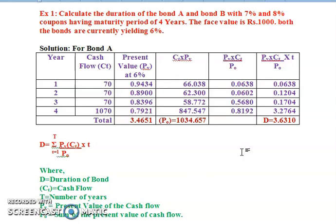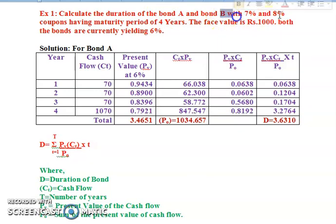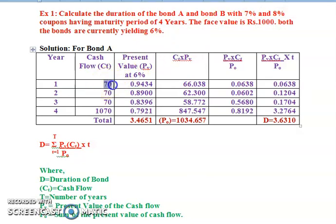In the cash flow column for Bond A, the coupon rate is seven percent. Seven percent of 1000 is 70, so for years one, two, and three the cash flow is 70. For year four it is 1000 plus 70, which equals 1070, because in the final year the principal is also repaid along with interest.